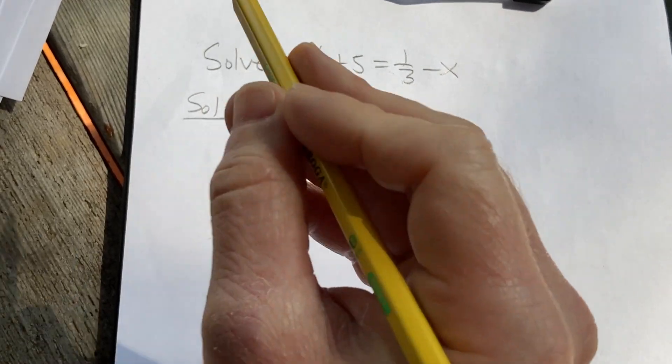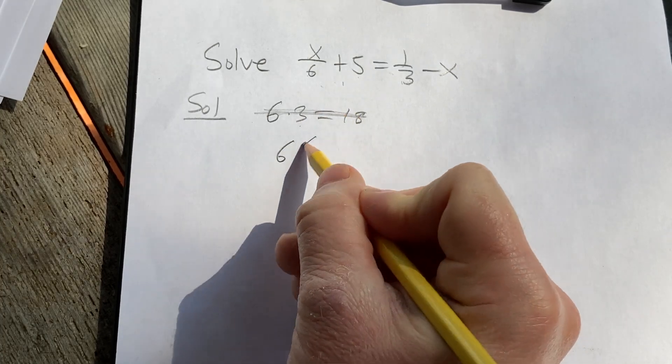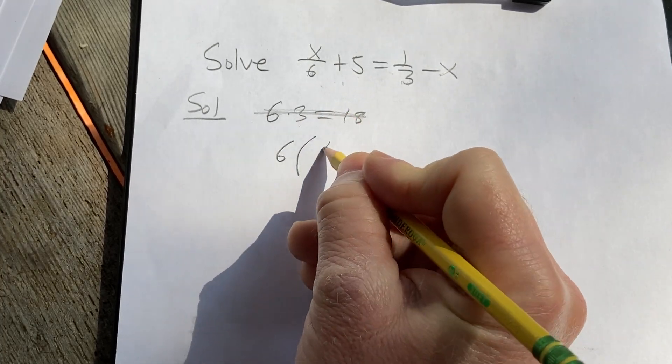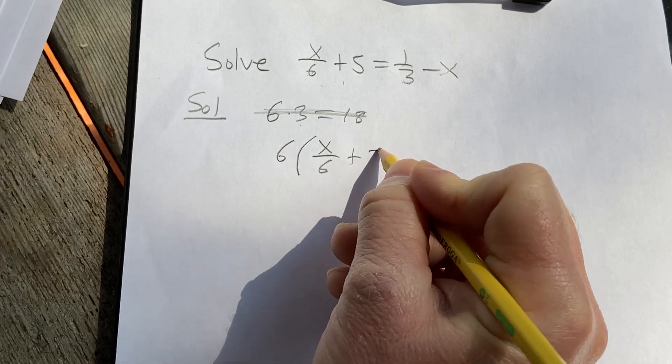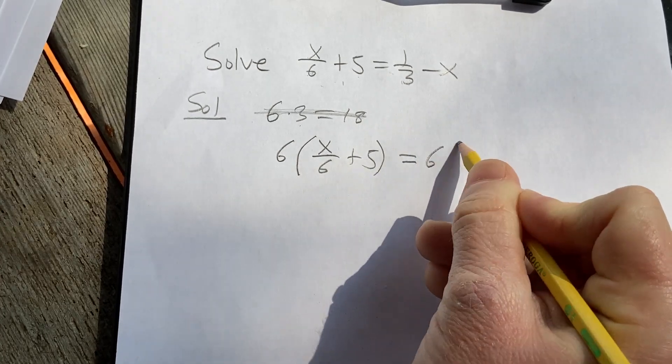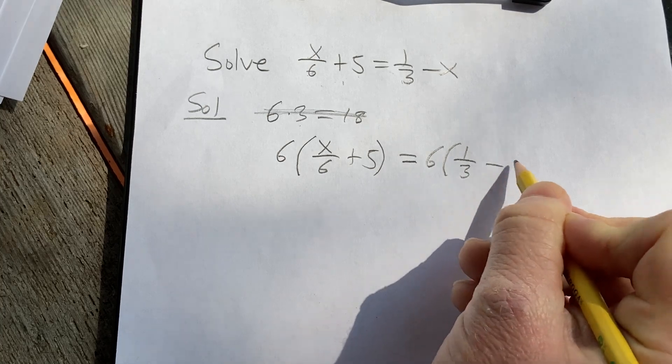So to do that, what you do is you write down the 6, then you put a parenthesis like this, and then x over 6 plus 5 equals, and then 6, parenthesis, 1 third minus x.